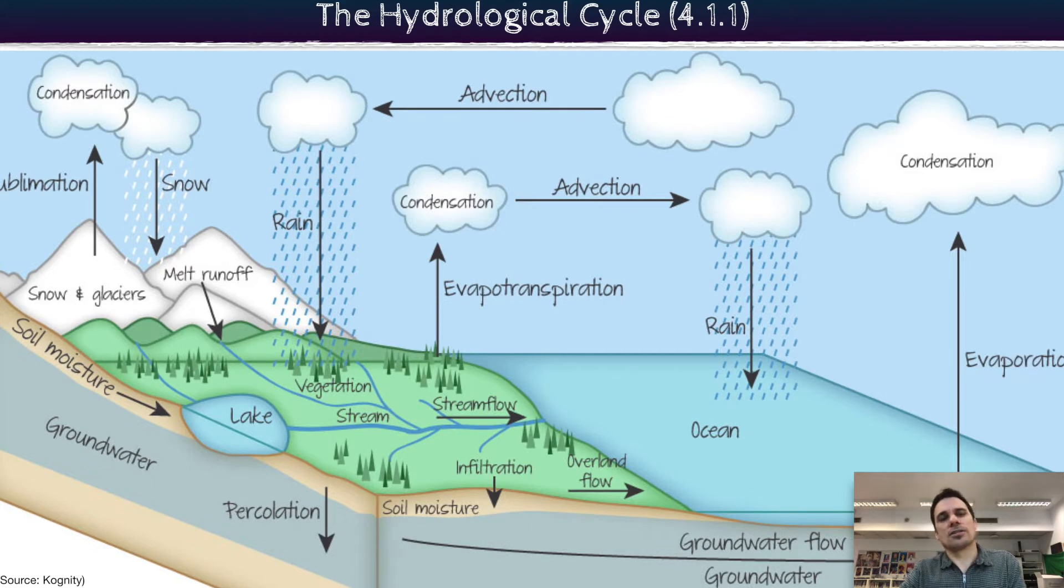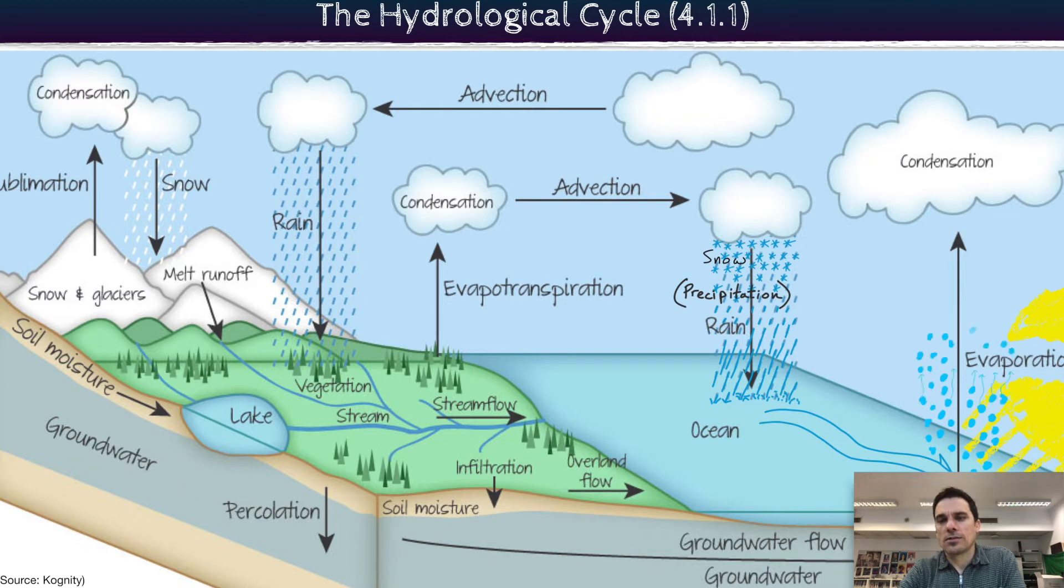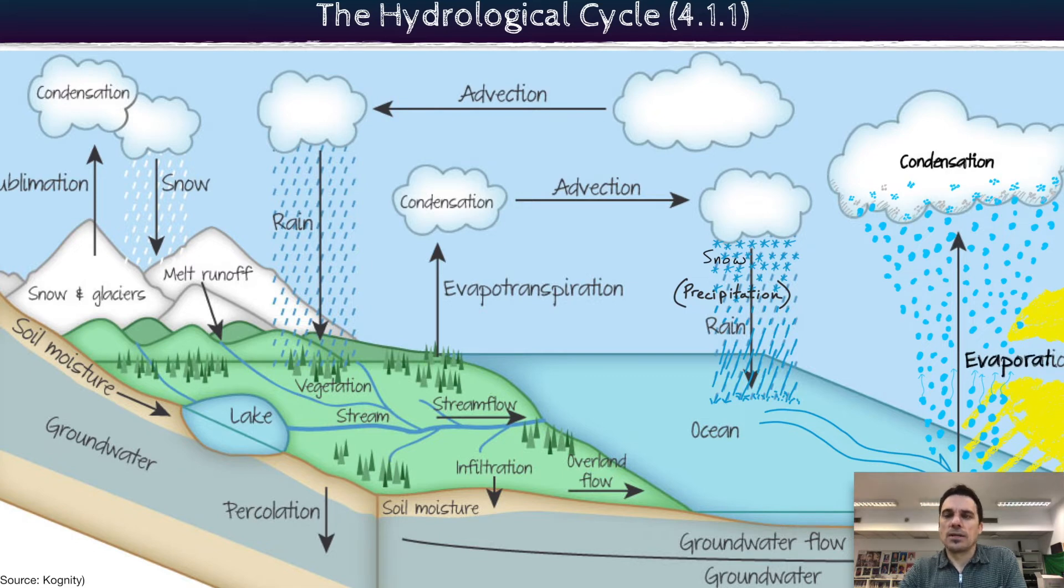So we get to the hydrologic cycle, otherwise known as the water cycle. In this image, you'll start to see the main part of the water cycle. Precipitation, water falls, hits the ocean. In this case, evaporation lifts it back up and then it condenses, condensation in the form of clouds. That's the classic water cycle.